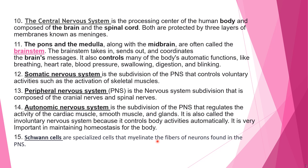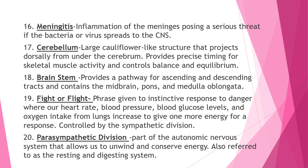Number fifteen: Schwann cells are specialized cells that myelinate the fibers of neurons found in the PNS. Number sixteen: meningitis is the inflammation of the meninges, causing a serious threat if the bacteria or virus spreads to the CNS — which is why there is both bacterial and viral meningitis.